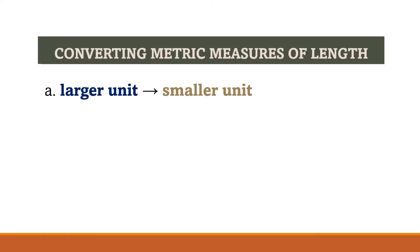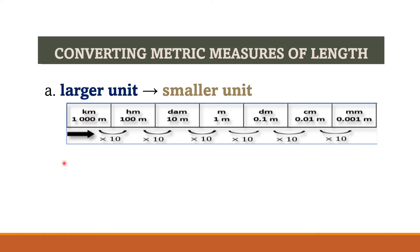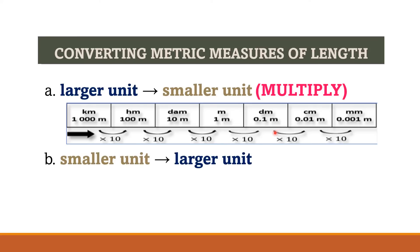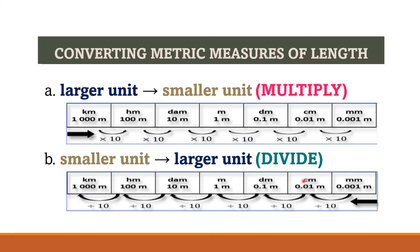When converting from a larger unit to a smaller unit, say from kilometer to meter, we multiply depending on the number of places we move to the right. On the other hand, when converting from a smaller unit to a larger unit, we divide. For example, converting centimeters to hectometers, we count the number of places — that is 1, 2, 3, 4 — so we divide the value in centimeters by 10,000.